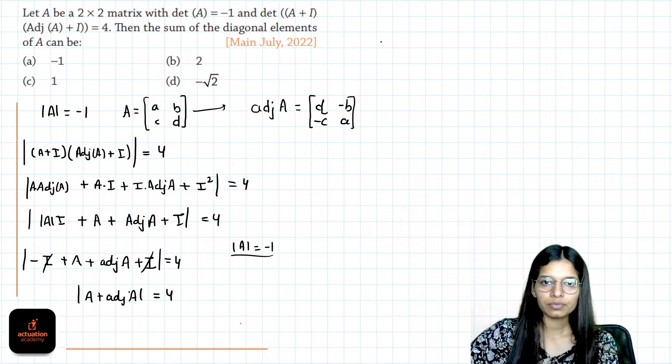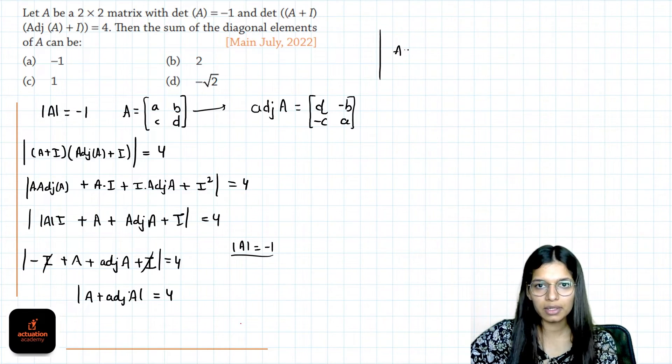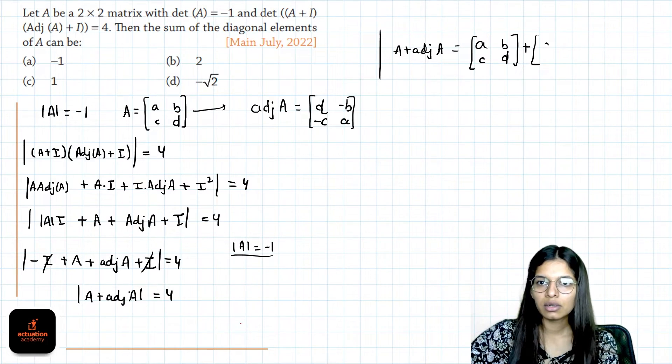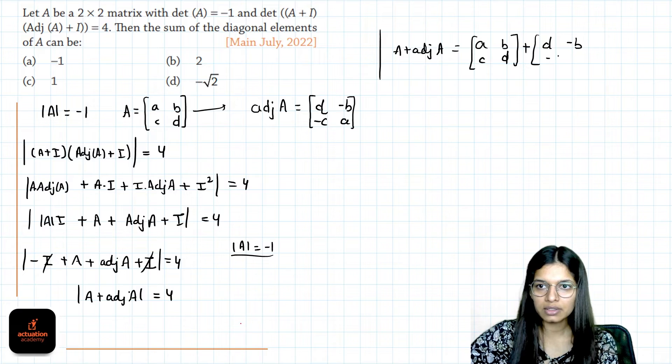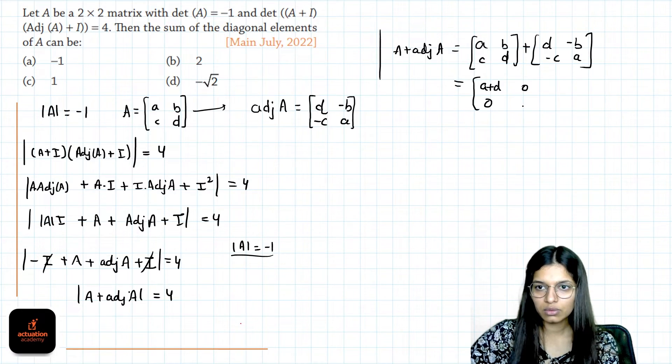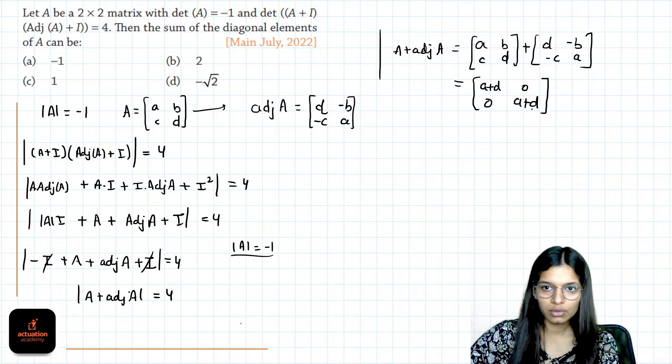So now, what will be our A plus adjoint of A? It will be a, b, c, d plus d, minus b, minus c, a. Here it will be a plus d, 0, 0, a plus d.